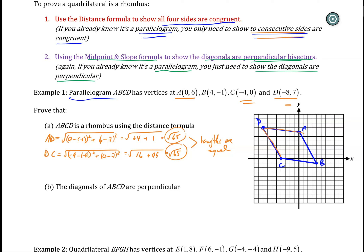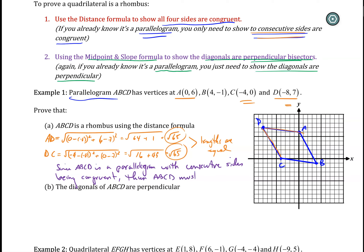We need a sentence that ties this all together. We can say that since ABCD is a parallelogram with consecutive sides being congruent, then ABCD must be a rhombus. This sentence ties all the pieces together and gives a specific reason as to why it is whatever they asked to find.